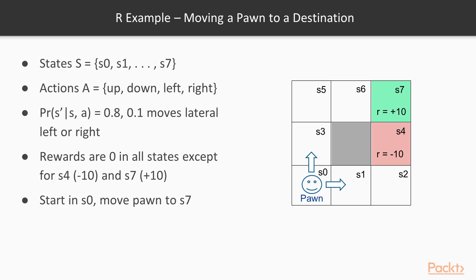Let's look at an R example: moving a pawn. Our pawn starts in state S0 and the objective is to move it to state S7. The actions are up, down, left, or right. There are eight states, S0 through S7. Rewards in all states are zero, except S4 where the reward is minus 10 — and you can pass through S4 — and S7 where the reward is plus 10.